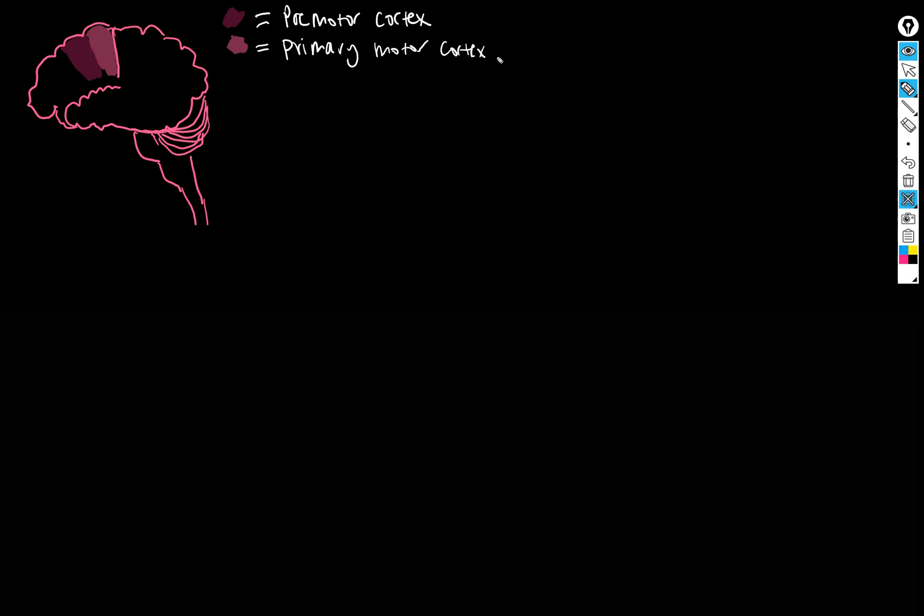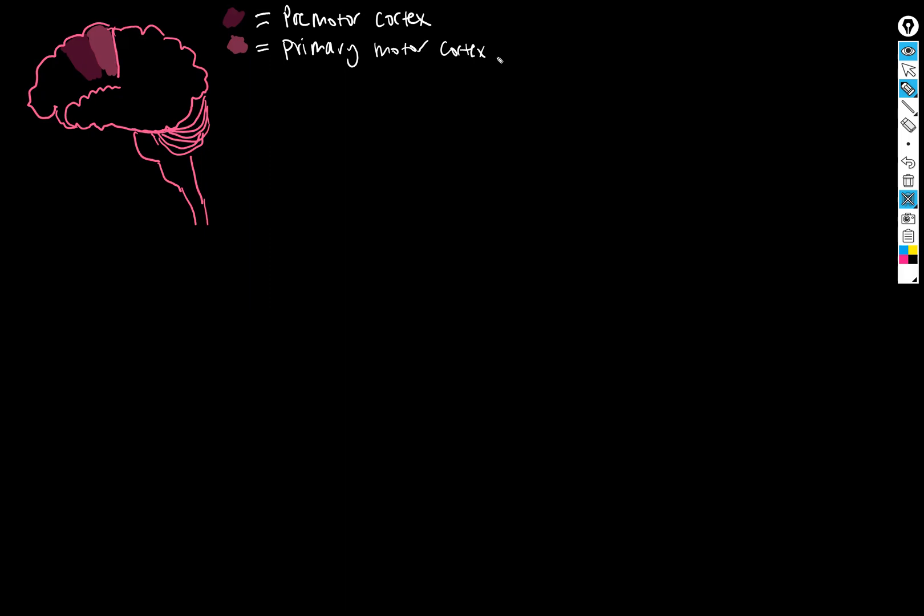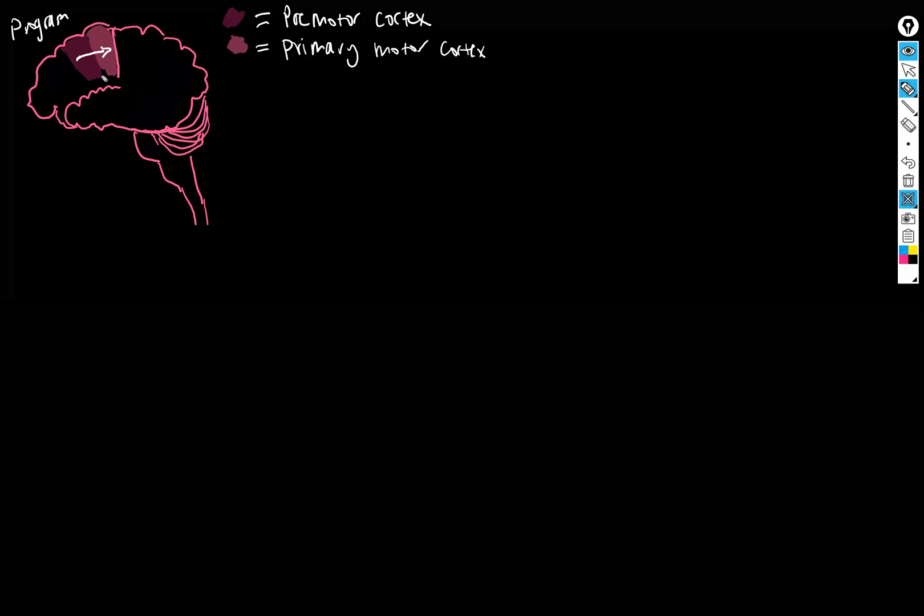So motor program means step one do this, step two do this, and you have a map of your body on your brain so you can coordinate the pattern of movement that you need so that you can send it to the motor cortex. So the program is sent from this brain region to this brain region, and it's sent in the form of action potentials. Remember, so all of the arrows I'm drawing up here are volleys of action potentials being sent from one neuron to another.